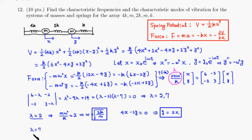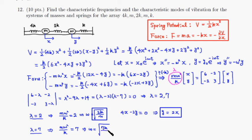For the second eigenvalue λ = 7: mω²/k = 7, so the second characteristic frequency is ω = √(7k/m). Plugging λ = 7 into the matrix: (6−7)x − 2y = 0 → −x − 2y = 0.